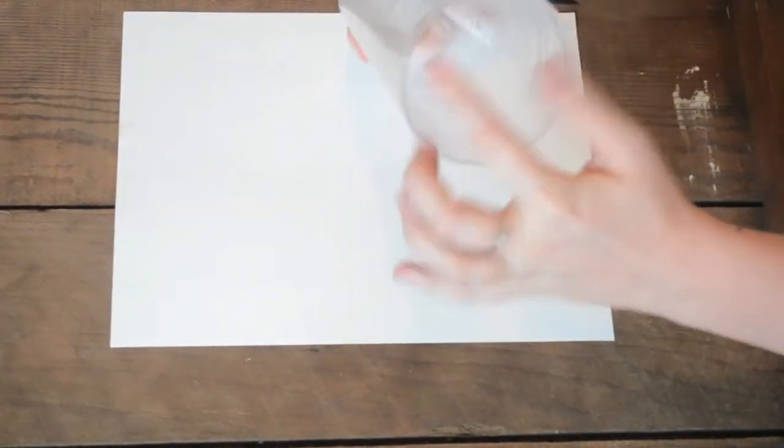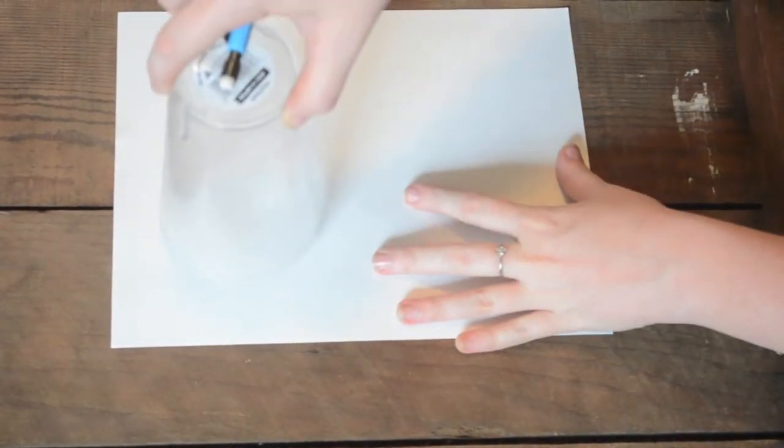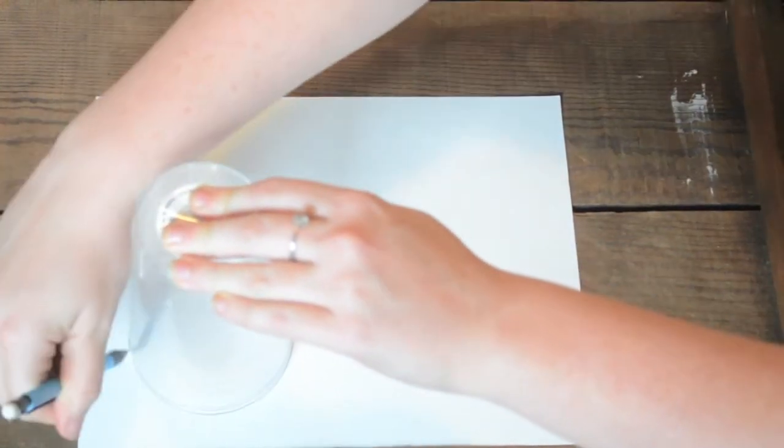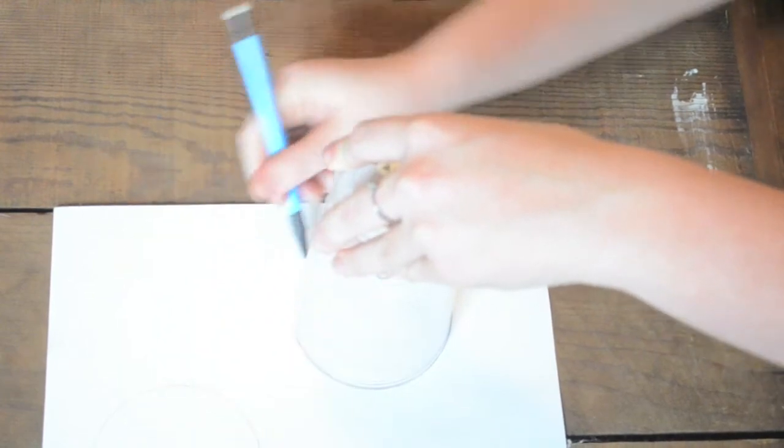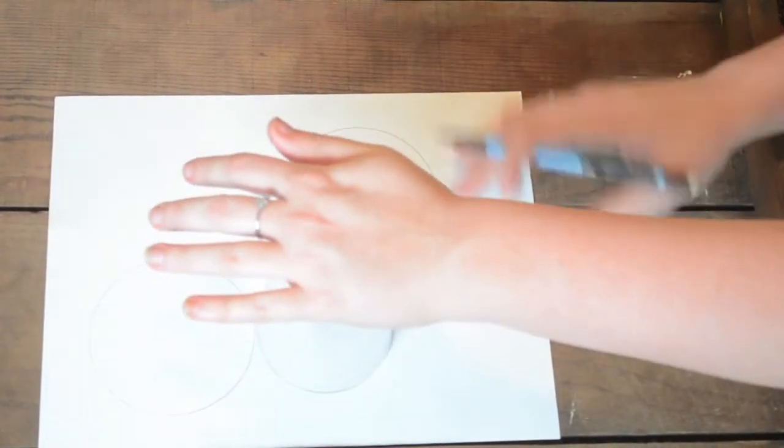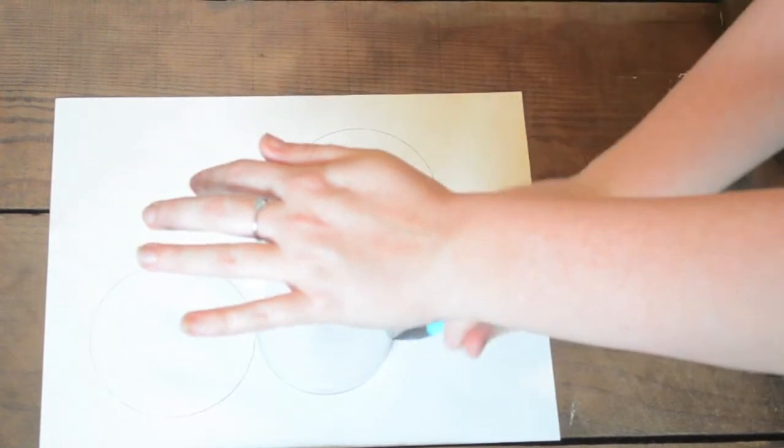So for this project, go ahead and print off a picture that you would like. I chose a picture of some palm trees. Flip it over and draw different sized circles on the back, and make sure that if you're doing two circles by each other that they don't touch, so when you glue your picture together it all adds up into one picture, if that makes sense.